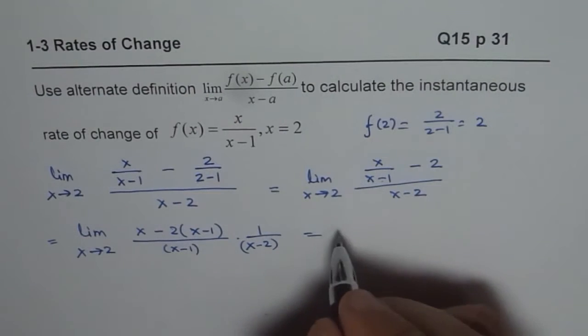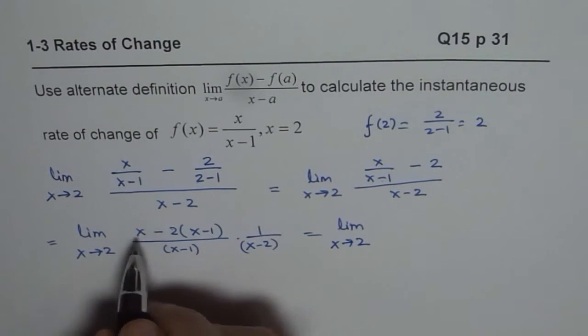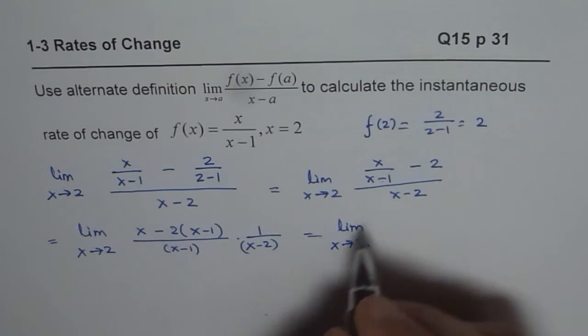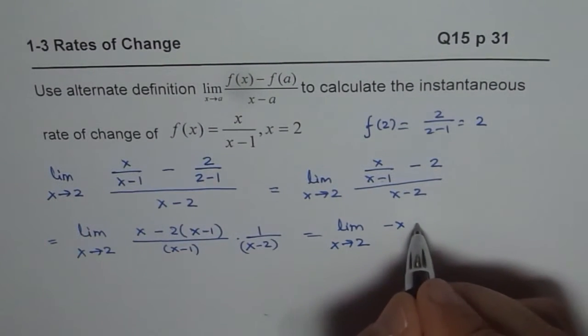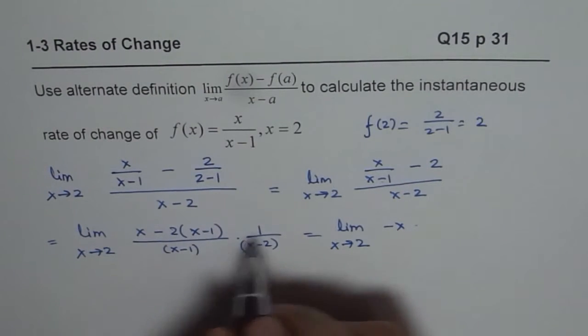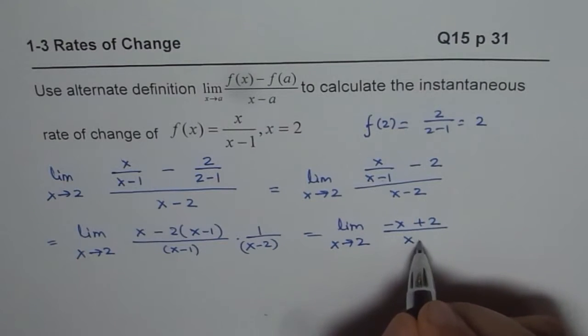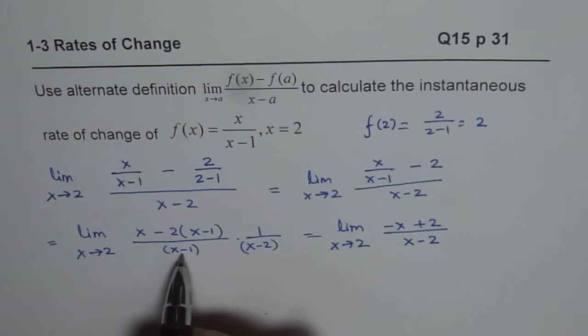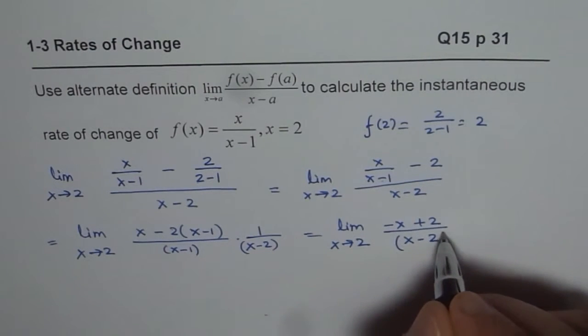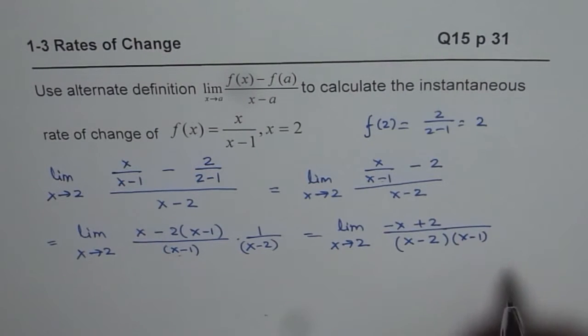So, let us simplify the numerator. We get limit x approaches 2. So, x minus 2 is minus x and minus and minus 1 becomes 2 times minus 1 becomes plus 2 over x minus 2. And we have x minus 1 here also. I mean, it is x minus 1 times x minus 2.